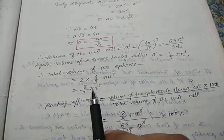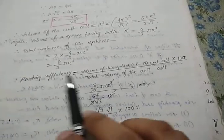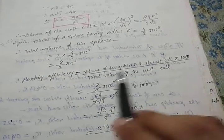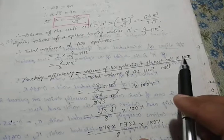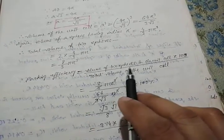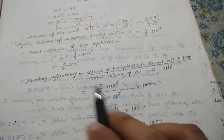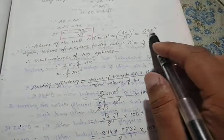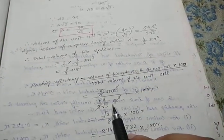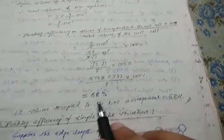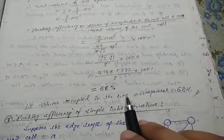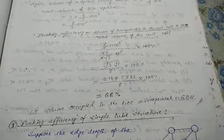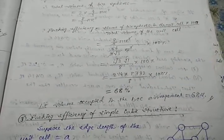Packing efficiency in case of BCC arrangement equals volume of two spheres divided by total volume of unit cell times 100 percent. After calculation, we get 68 percent packing efficiency for BCC arrangement. Thank you.